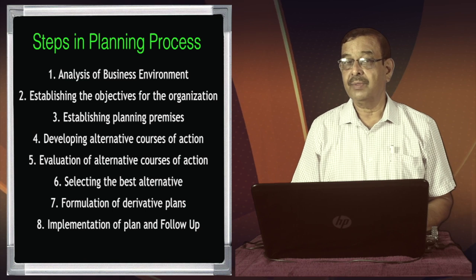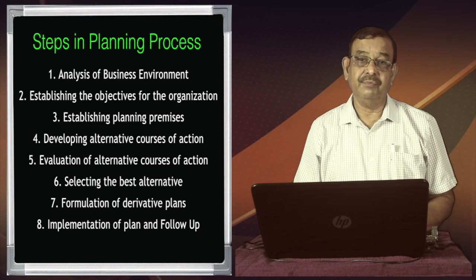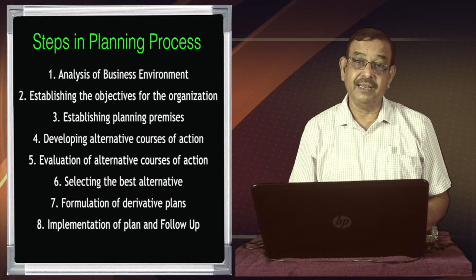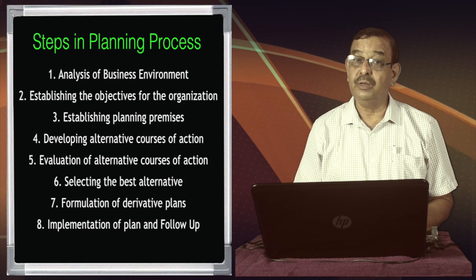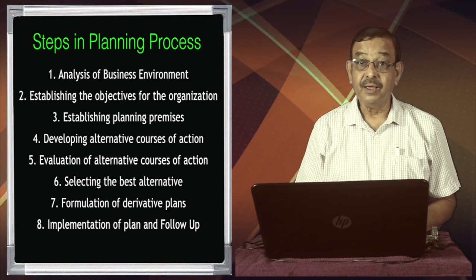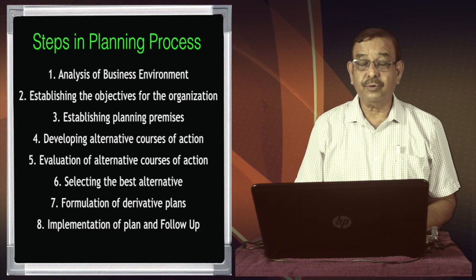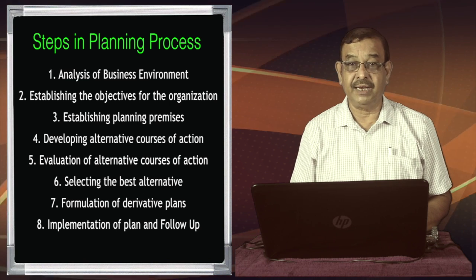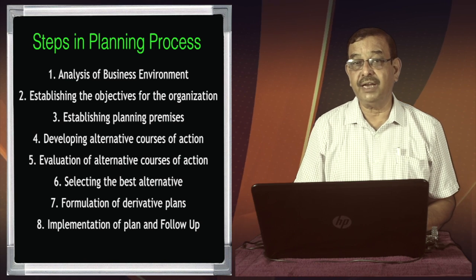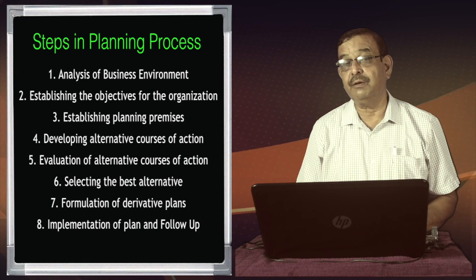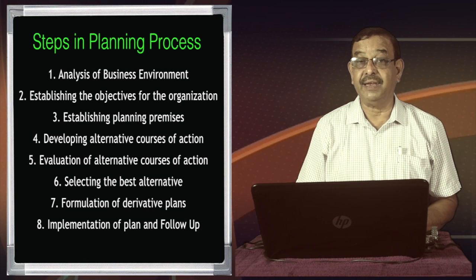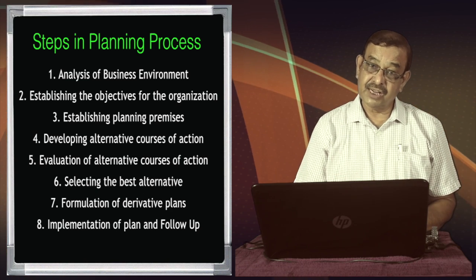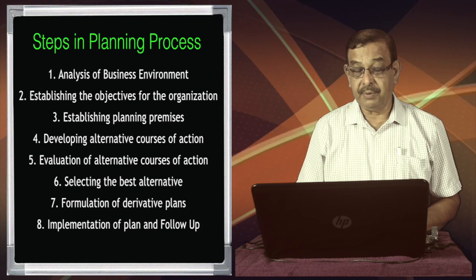When we establish objectives, we must also establish planning premises. For example, if we set an objective of achieving a 20% annual growth rate after 3 years, we are assuming that the current market growth rate will prevail for the coming 3 years, and that all our factories will be running successfully. These rationally drawn assumptions are planning premises — we must be clear about these assumptions before finalizing objectives.